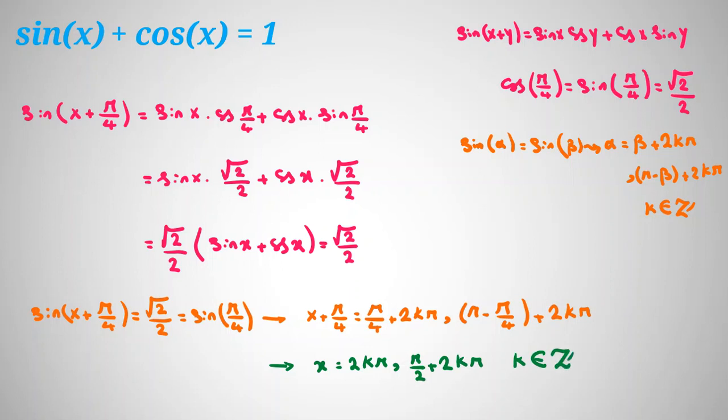And it's easy to check. Because if x is 2k pi, sine is 0 but cosine is 1. If x is pi over 2 plus 2k pi, then sine is 1 but cosine is 0. So we found all answers for x for this problem.